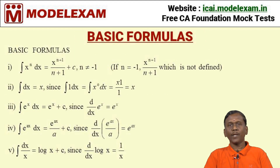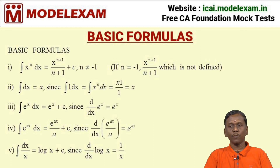Now we can look at the basic formulas of integral calculus. Formula 1: the integral of x^n dx is equal to x^(n+1) divided by (n+1) plus c, where n is not equal to minus 1.